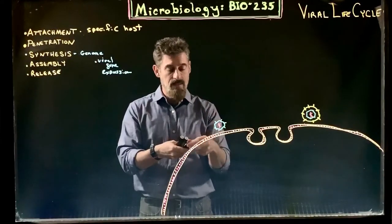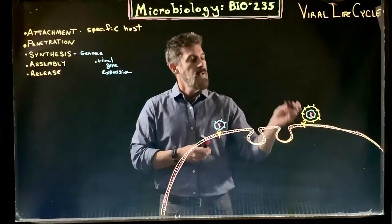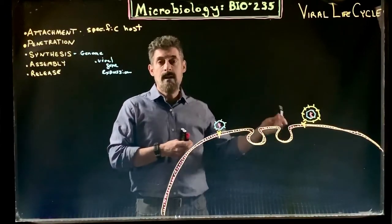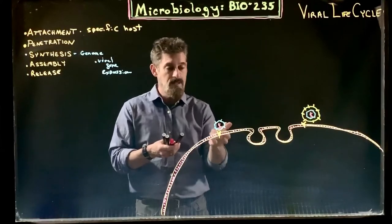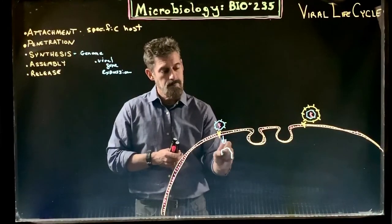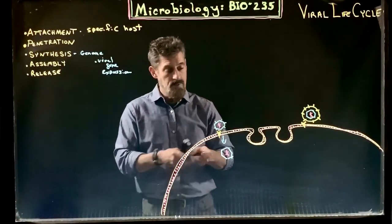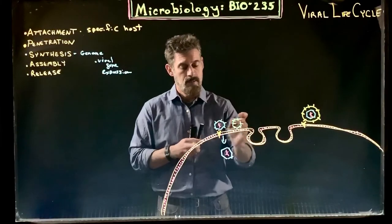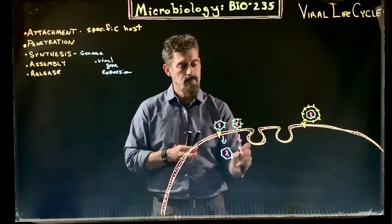They'll attach to specific receptors on the surface of the cell — proteins in this particular cell that this virus identifies. If this cell doesn't have those receptor proteins, the viral particle does not bind to that particular cell. Once that happens, one option is those proteins will create a channel that can bring the viral particle through the membrane and bring the whole thing into the cell. Another option is that the viral particle has its little binding proteins, but its DNA itself just gets pushed into the cell — no viral particle.